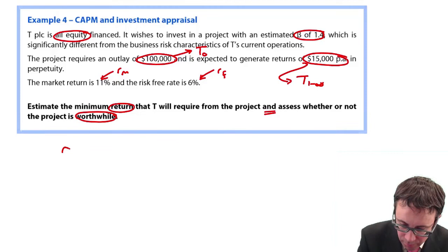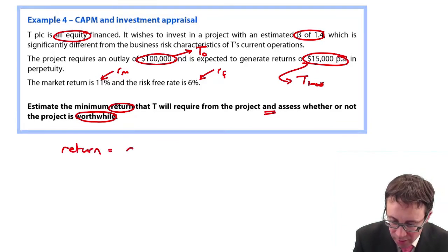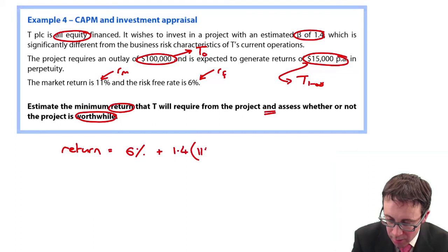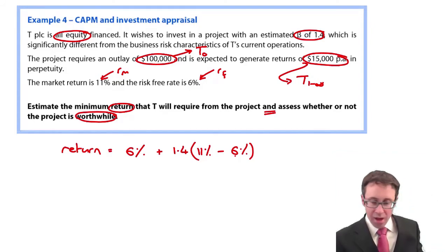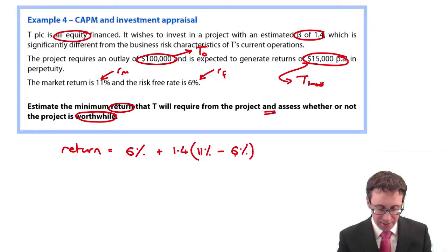Let's go through there and have a play around with that. To work out the return, we take our risk-free rate, 6%. We then add on beta, 1.4, multiplied by the difference between RM and RF.